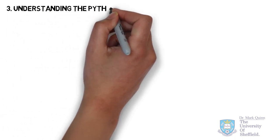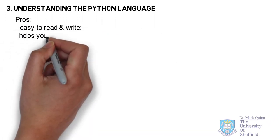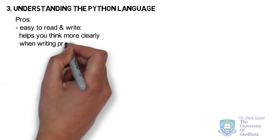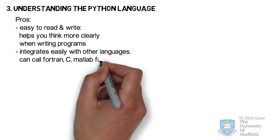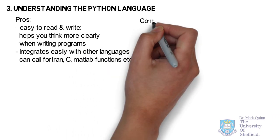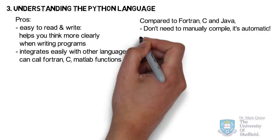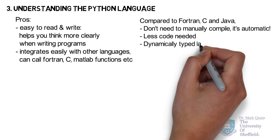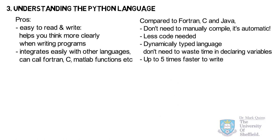Let's look at some of the specific pros and cons of Python. Fundamentally, Python is easy to read and to write, which helps you think much more clearly as you work and program. Python also integrates very easily with other languages such as C and Fortran, enabling you to call their functions — indeed much of Python itself is written in C. Compared to Fortran, C and Java you don't need to manually compile; in Python it's automatic. You need substantially less code to do the same job, and it's also dynamically typed, meaning you don't need to waste time declaring variables. Taken together, these points mean it's up to five times faster to write equivalent code in Python compared to Fortran, C and Java.